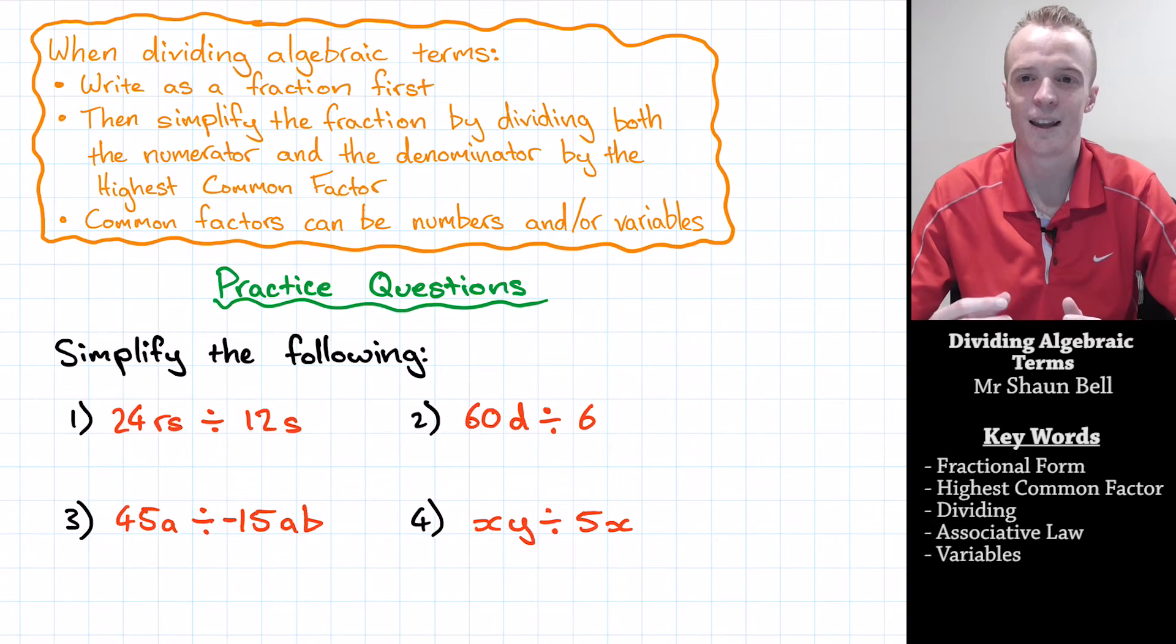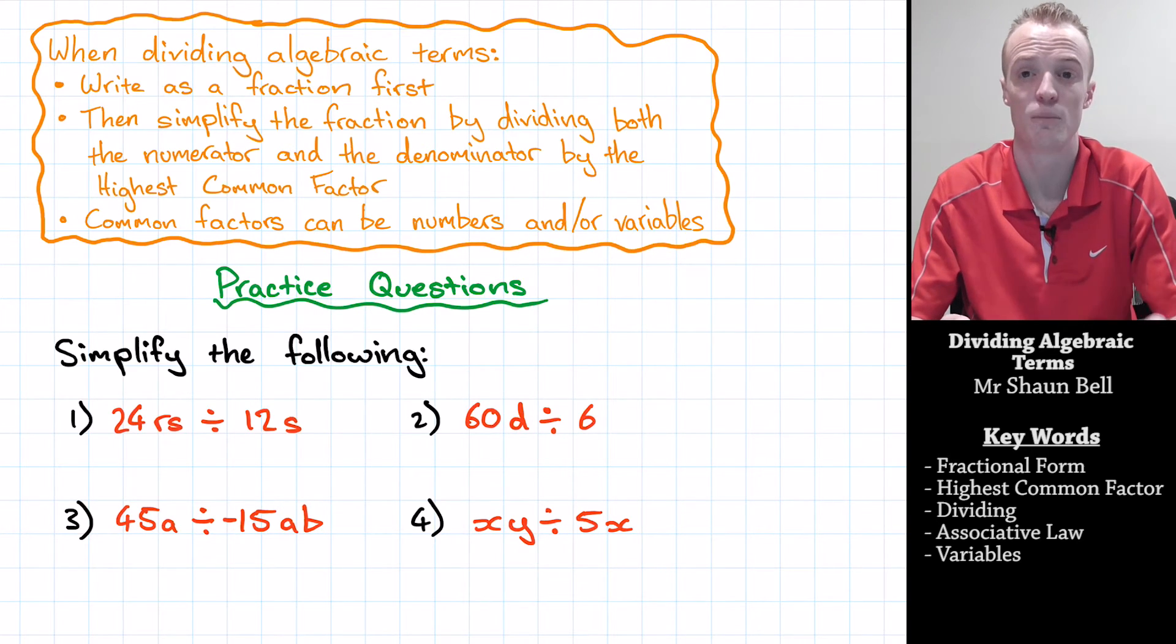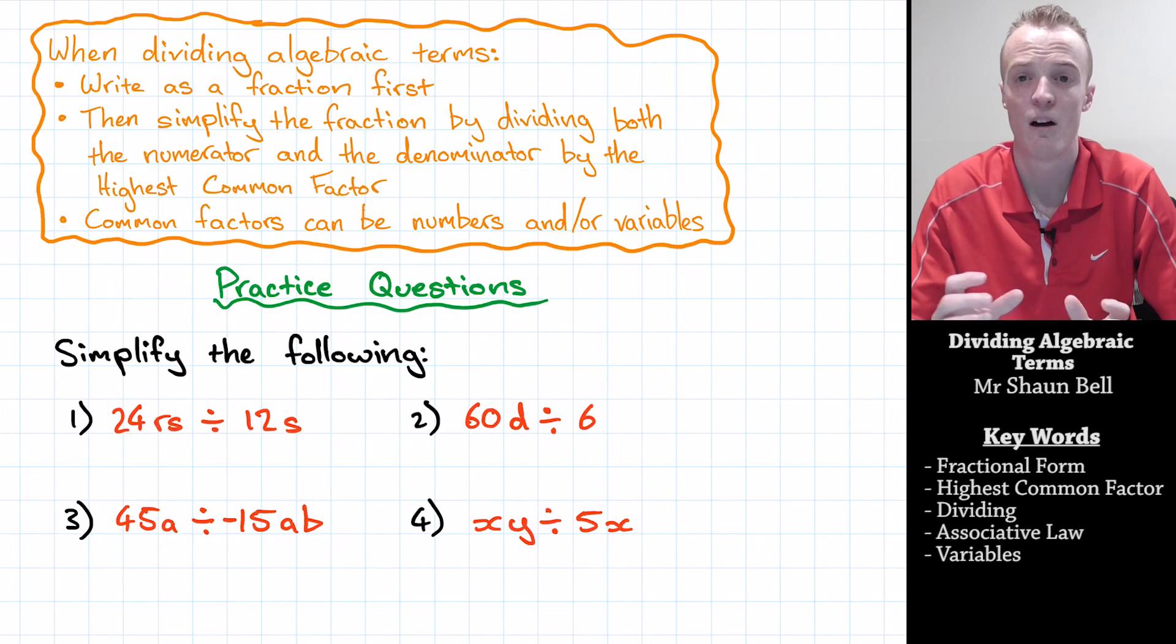So let's revise the key steps of dividing algebraic terms. When we're dividing algebraic terms, the first thing we need to do is represent the division in fractional form. And then we use the associative law to break up our fractions into the numeric component and the variable component.